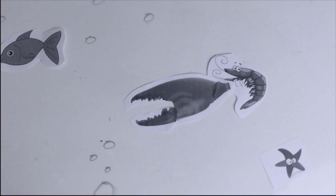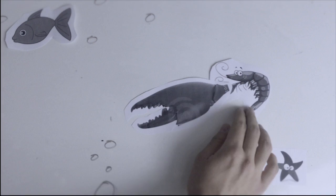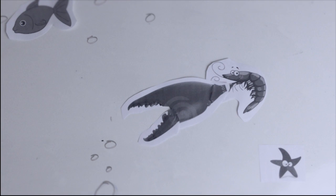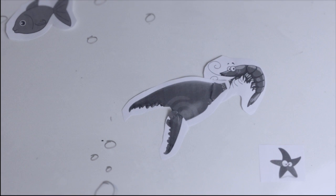The snapping shrimp grows to only one or two inches long. It is distinctive for its remarkably disproportionately large claw, larger than half of the shrimp's body.